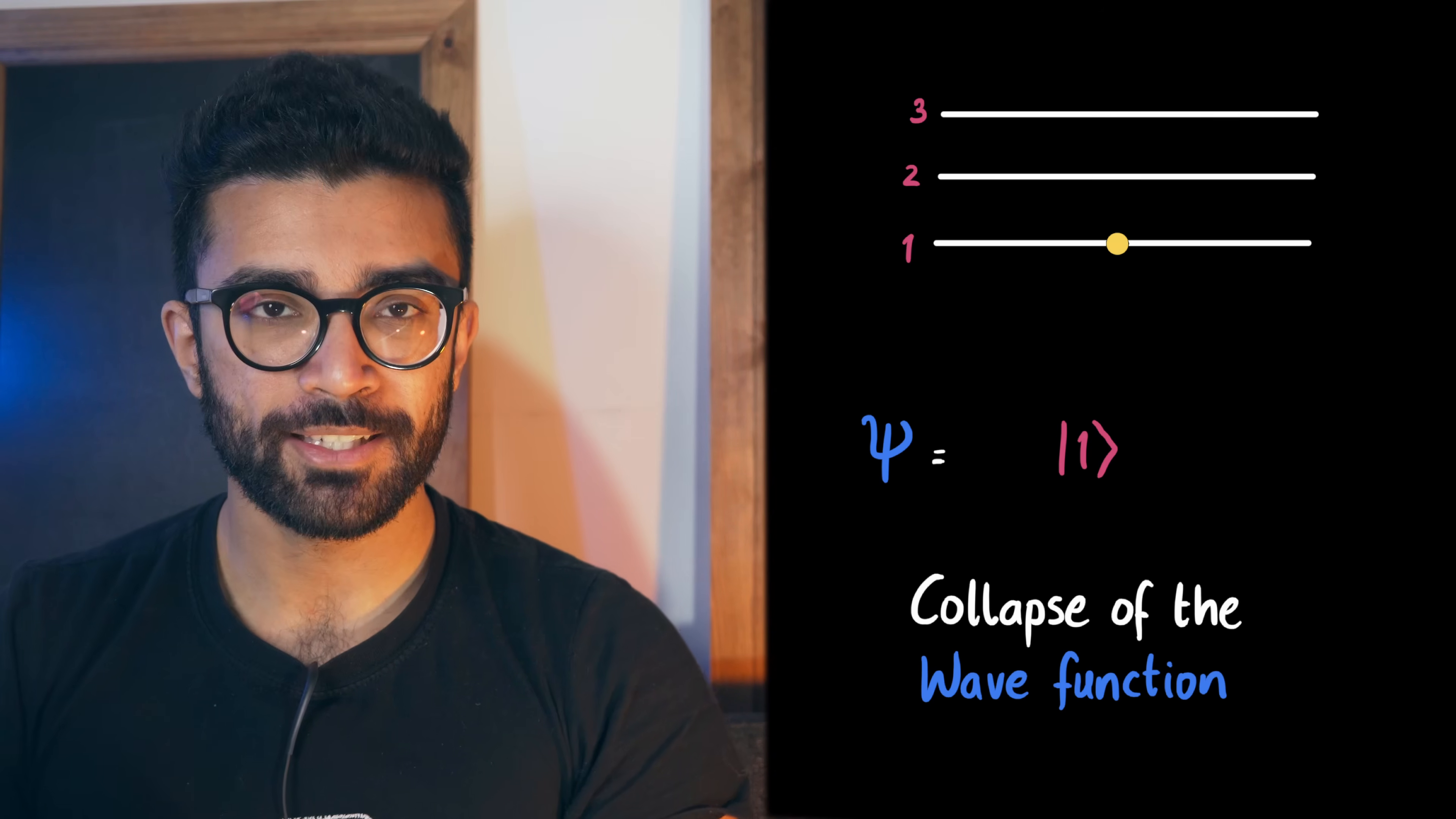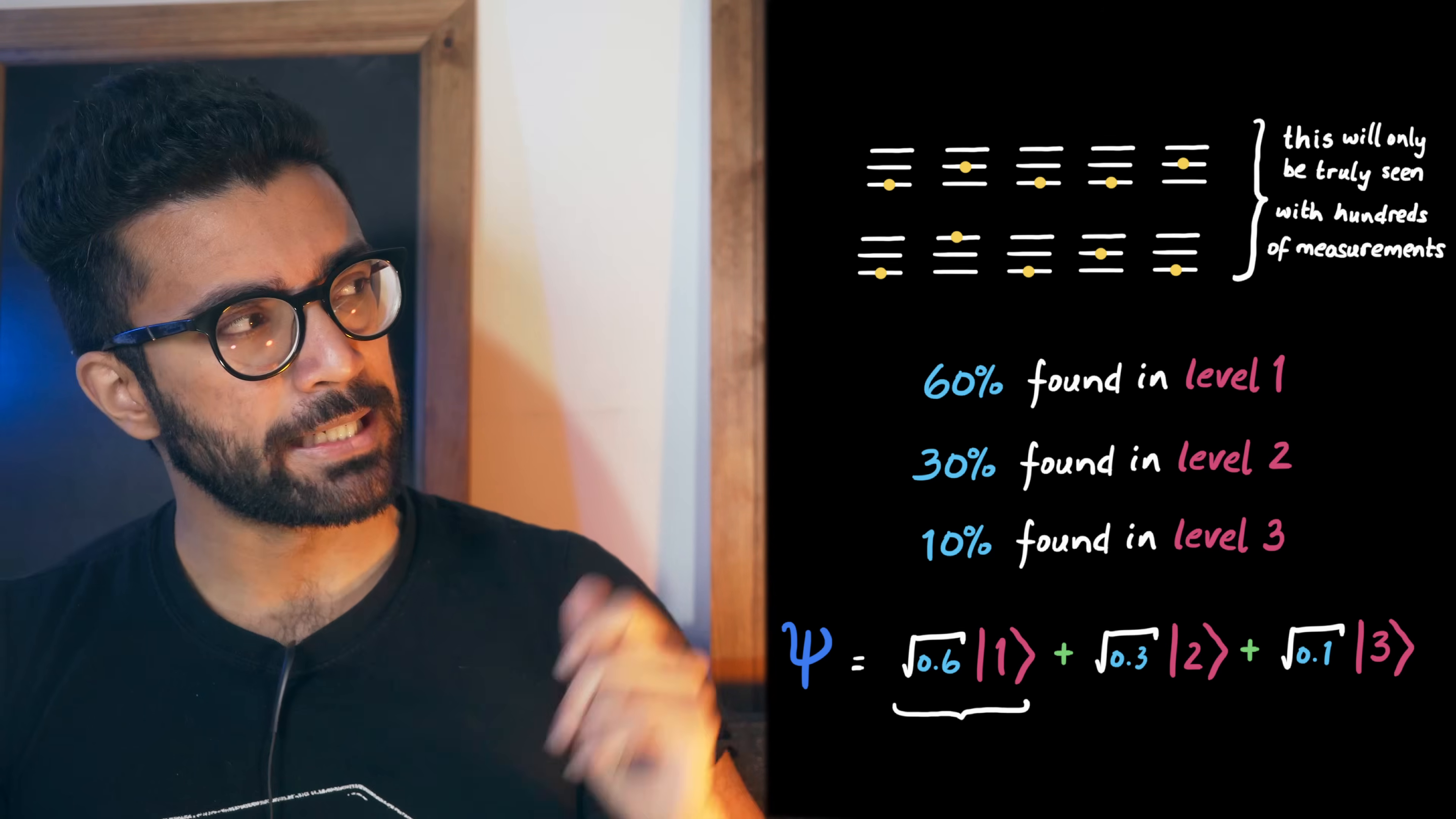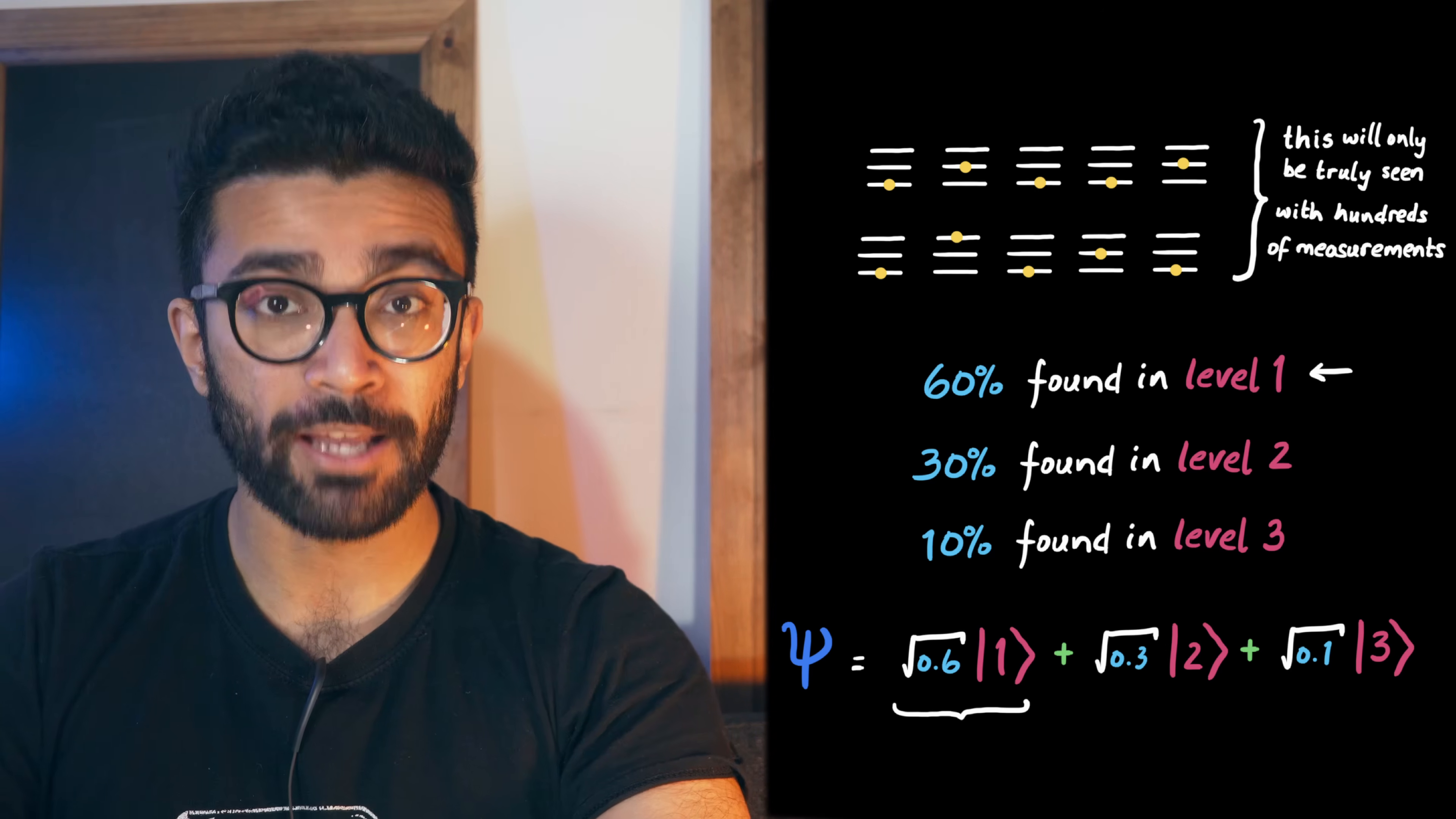We have no way of predicting exactly which state our system will collapse into, but if we repeat the same experiment over and over, then the kind of results we will get tend to match the probabilities given by our wave function. This makes sense, because if there is 60% probability of getting this state in any one measurement, then if we make lots of identical measurements, 60% of these should be in this state. But the important thing is that we have no way of predicting which state a particular system will fall into before we actually make the measurement and find out.